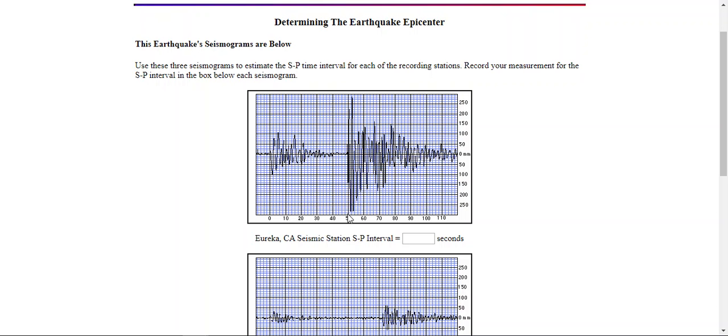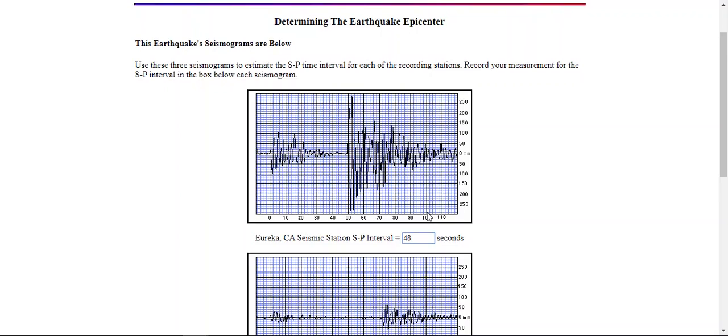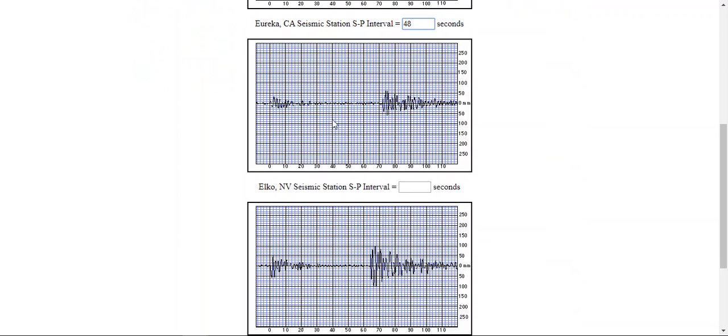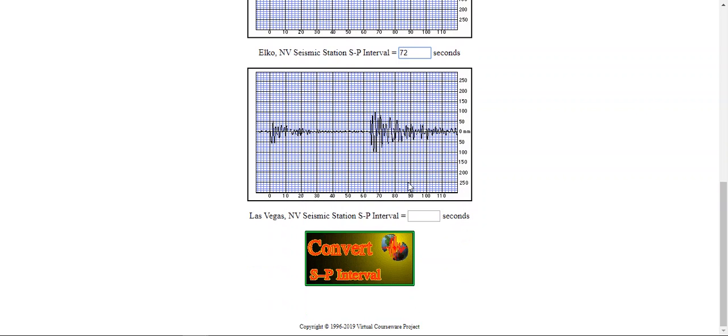So for this one, we're going to say it's about 48 seconds. Enter it in the box and move on to the second station. We always start at zero, and then we go down to about 72 seconds. The third station, again, we start at zero, and then that first blip comes in at right about 65 seconds.